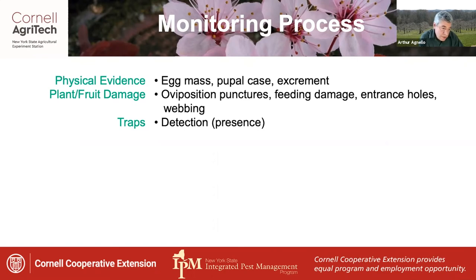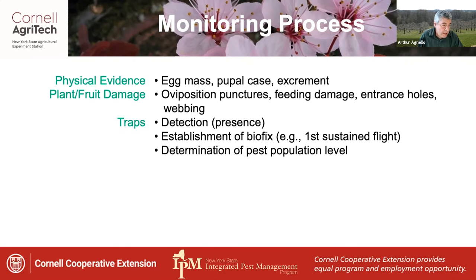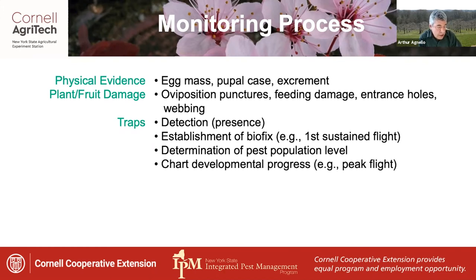Next comes traps. Trapping is a key activity which serves a number of purposes. First of all is detection — that is, whether a pest is actually present in the orchard. Traps are also used to establish a biofix, like the beginning of sustained flight, and they can help with a general determination of pest level in the field. Trapping also allows us to chart an insect's developmental progress, for instance by identifying peak flight, which relates to egg laying.